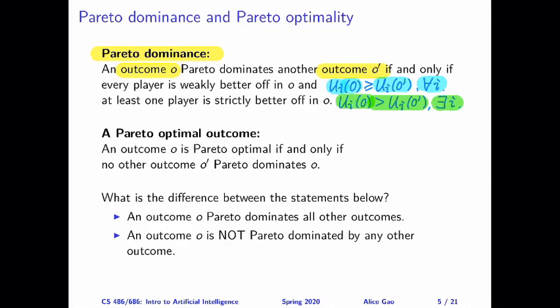This property gives us a way of comparing two outcomes, but notice that this comparison is a pretty strong relationship. It's basically saying everyone thinks O is at least as good, and at least one person thinks O is strictly better. So we could encounter situations where O does not Pareto dominate O prime and also O prime does not Pareto dominate O — we cannot always establish this relationship for any pair of outcomes.